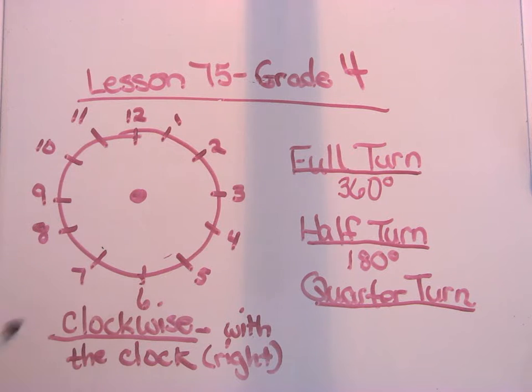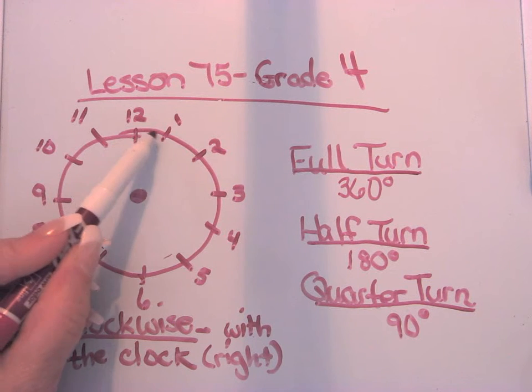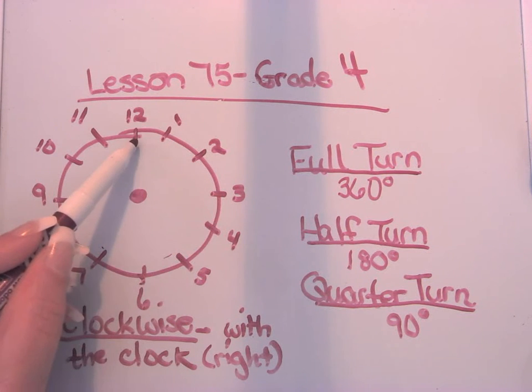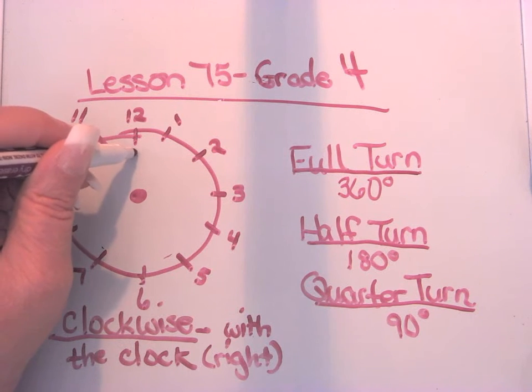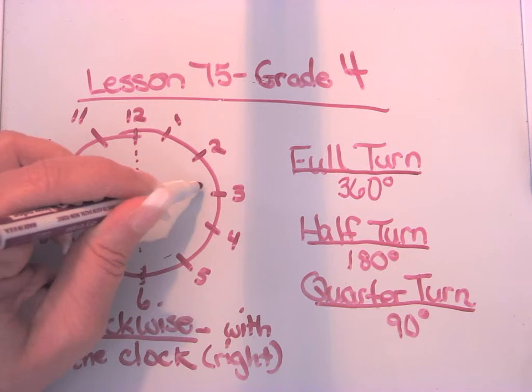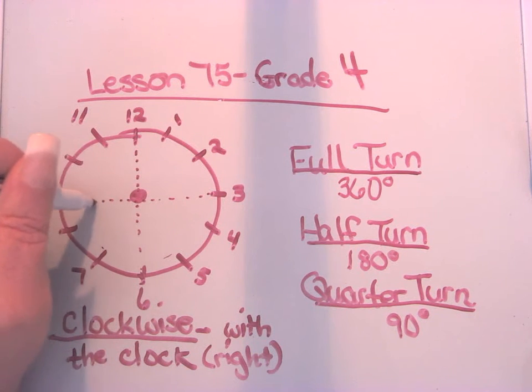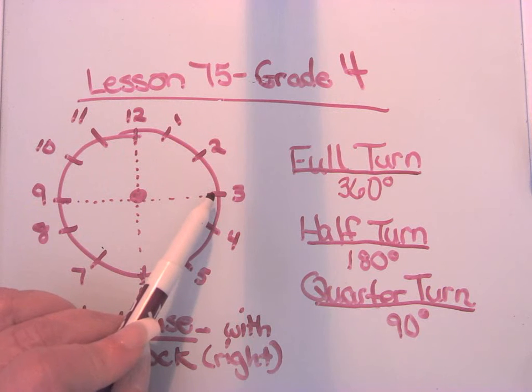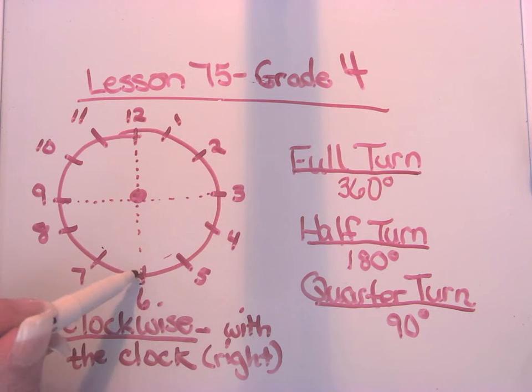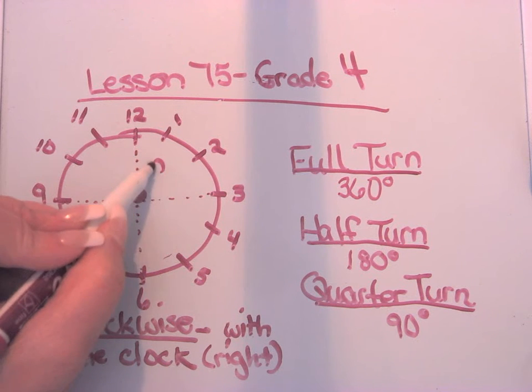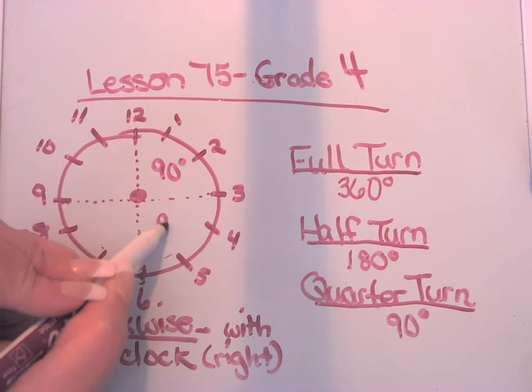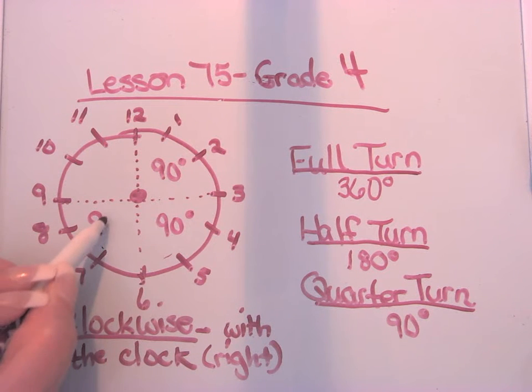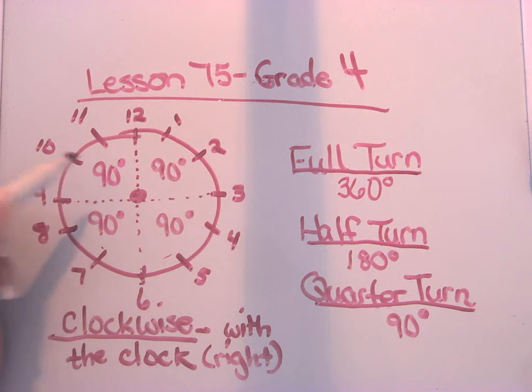A quarter turn is what we call 90 degrees. That's going half of a half or a quarter. When you think of taking this clock and you're dividing it into four sections, like a quarter would be, we're going one quarter turn would be here. Going to here would be a half a turn or two quarters, three quarters at the nine, and then a full turn going to the 12. So each of these is broken down into 90 degrees. When we add all those up, we should get 360.